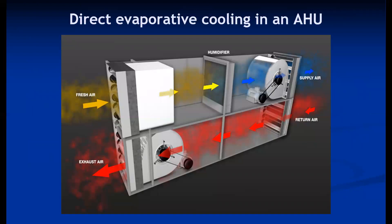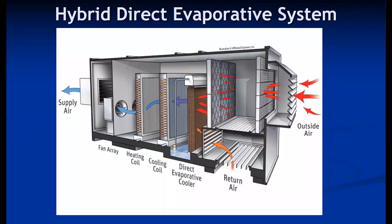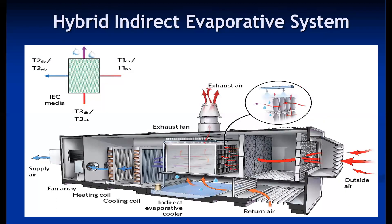These are some models of AHUs fitted with humidifiers, and this is an AHU fitted with a direct evaporative cooler along with a cooling coil and heating coil — this is called a hybrid air conditioning system. The direct evaporative cooler is used for humidification, while the cooling coil provides additional cooling and the heating coil handles heating applications. This is the hybrid direct evaporative cooling system. In the hybrid indirect evaporative cooling system, an indirect evaporative cooler is installed followed by a cooling coil and heating coil.